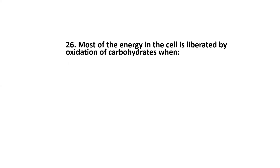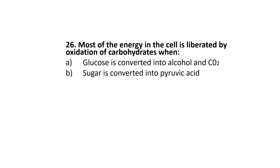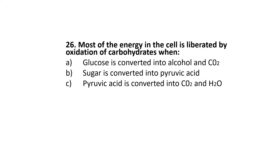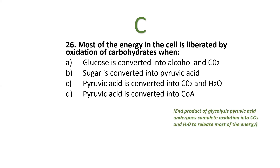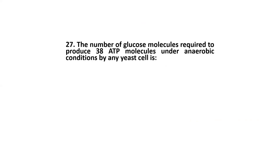Next: most of the energy in the cell is liberated by oxidation of carbohydrates when — glucose is converted into alcohol and carbon dioxide; sugar is converted into pyruvic acid; pyruvic acid is converted into carbon dioxide and water; or pyruvic acid is converted into acetyl coenzyme A? The correct option is C: pyruvic acid is converted into carbon dioxide and water, because the end product of glycolysis undergoes complete oxidation to release most of the energy.